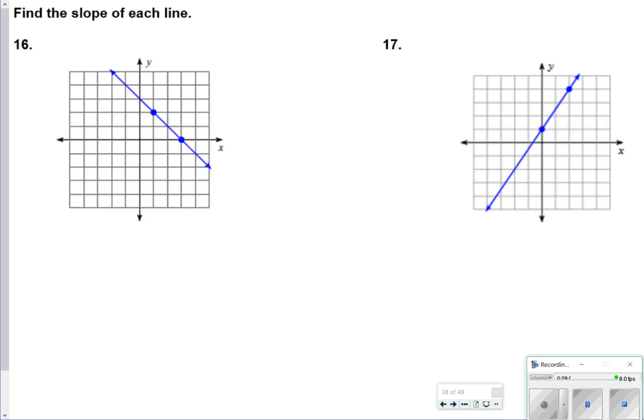For number 16, you're finding the slope of each line. So remember that is rise over run. And what I normally do is I just start with the leftmost point, and then figure out how much do I need to rise and how much do I need to run. So I need to rise down 2 and then run 2. So that's minus 2 for negative and positive 2 for run. That's going to simplify to be a negative 1 slope.